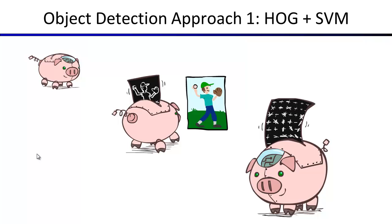Here's one of the two state-of-the-art types of approaches right now. We'll look at two lines of work. This first line of work has the following flavor: you first compute a feature descriptor of your image. A typical one being used is HOG — histogram of gradients.